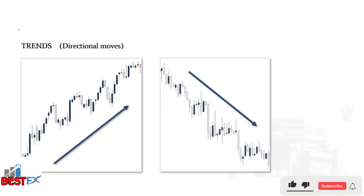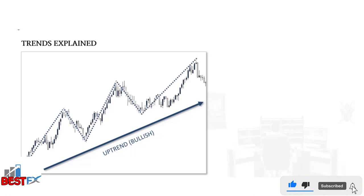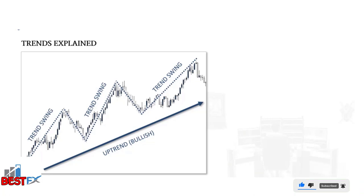Trends are directional moves in the market and can only move up or down — a bullish trend or a bearish trend. Looking at a chart, you can see a bullish trend moving from the bottom left to the top right. It's very uncommon for price to move in a straight line; it's more common to see regular pullbacks in a wave formation. These are called trend swings or trend legs — a swing up, a swing down — where pullbacks are weaker compared to the trend legs up.